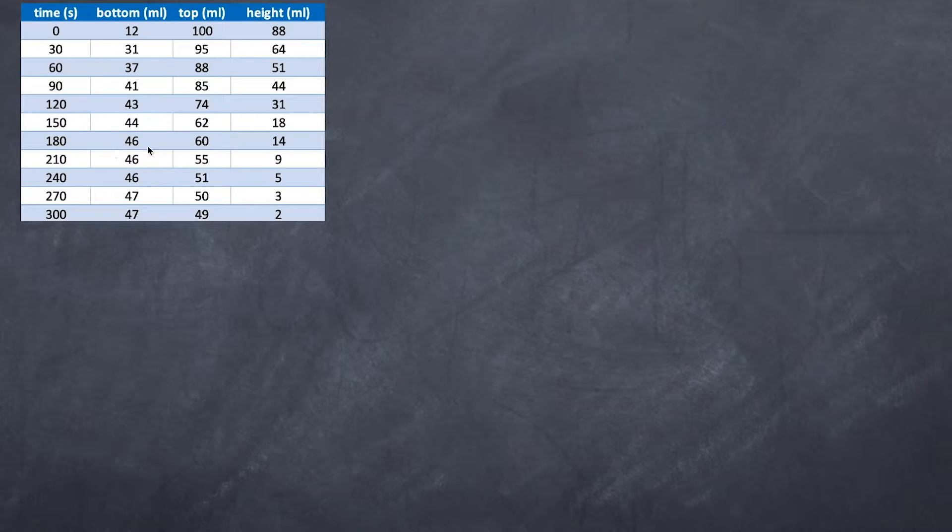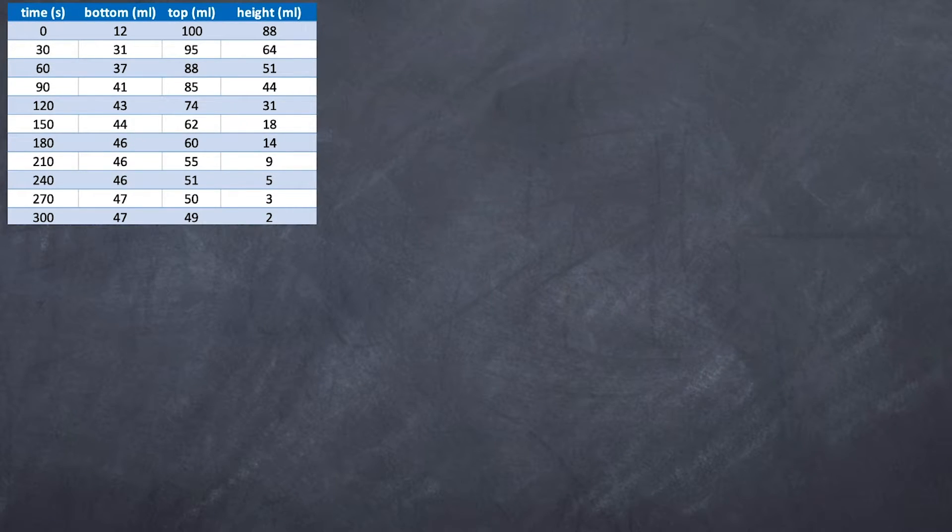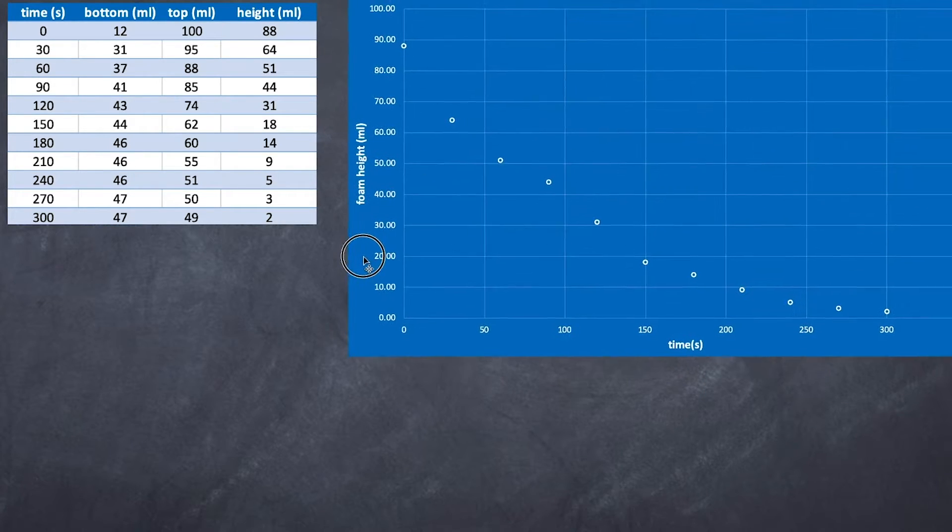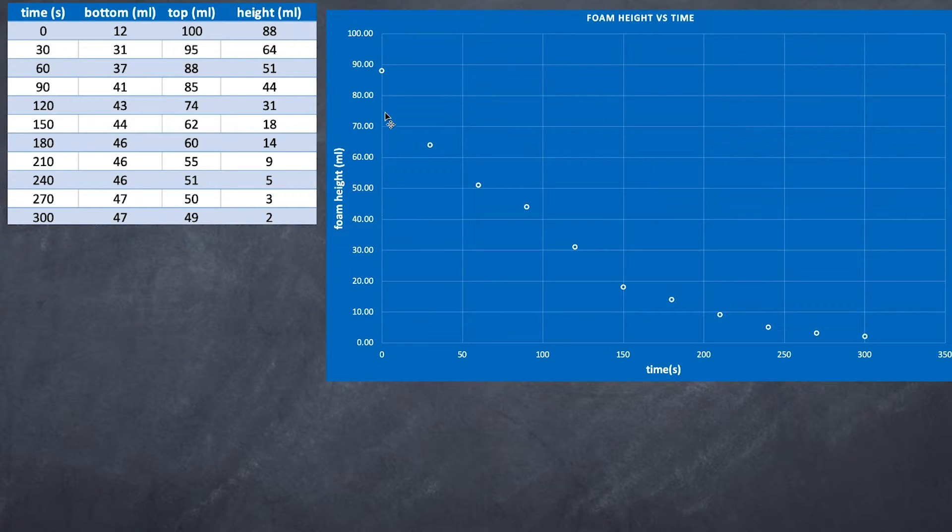Here I have a table that represents my data collected in Excel. You can see I have the time, the bottom level, the top level, and the difference, which is the height of the foam. Now let's look at what the graph looks like. Here I have my overall graph of the foam, and you can see it does not decay at a linear rate, it curves. This curve shows we have this decay rate. This is often referred to as exponential decay.